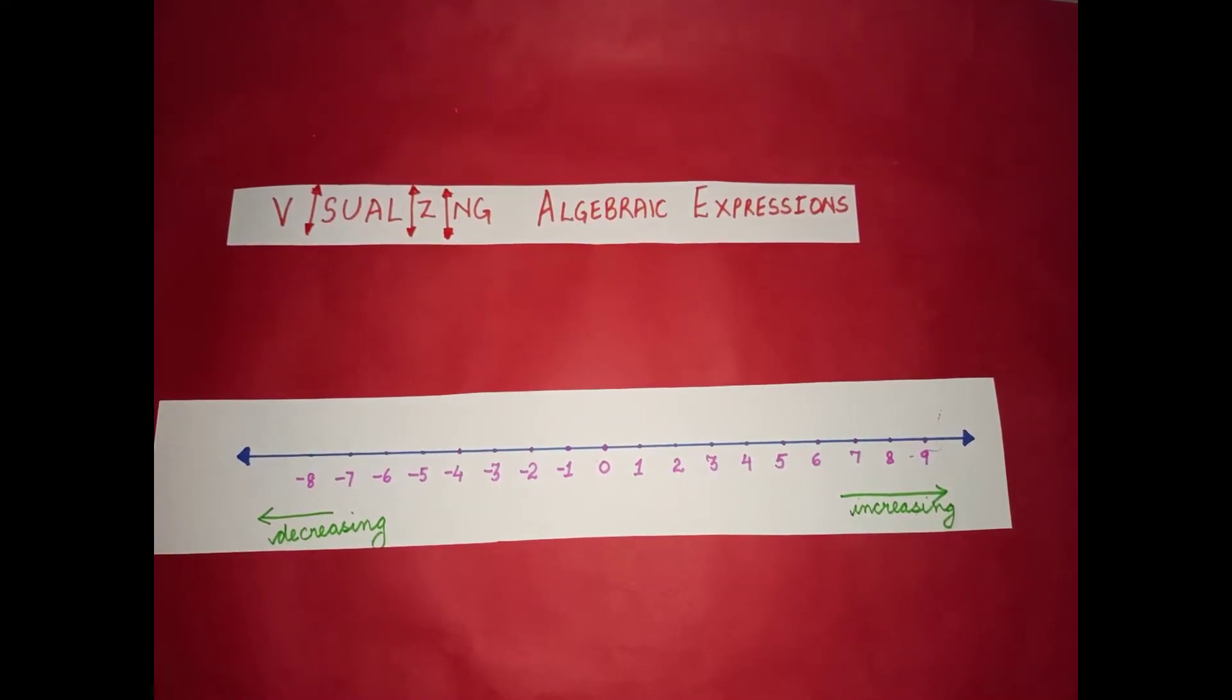In this number line you can see a set of numbers. The number in the middle is 0, and the numbers to the right of 0 are increasing, and numbers to the left of 0 are decreasing.